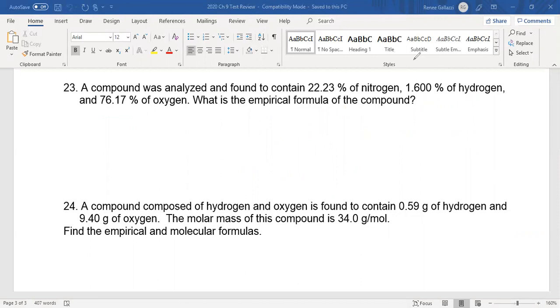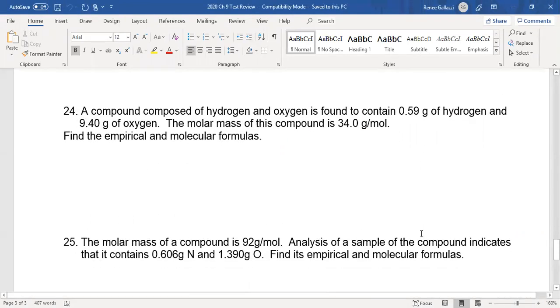Let's go ahead and look at a compound composed of hydrogen and oxygen found to be 0.59 grams of hydrogen and 9.40 grams of oxygen. The molar mass of this compound is 34.0 grams per mole. Now, it says find the empirical and then the molecular formulas. Even if they didn't tell you that, once you see this, you know they want to go to molecular formula. Just seeing that right there, the molar mass tells you we can find the molecular formula.